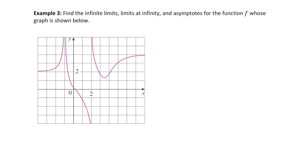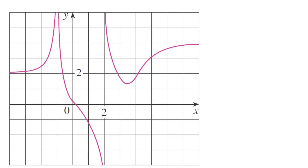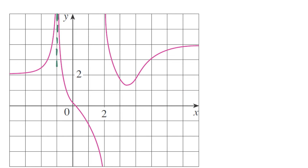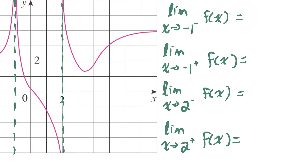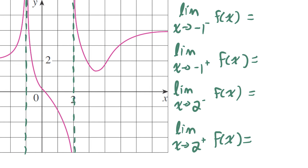Let's do one last example: find the infinite limits, the limits at infinity, and asymptotes for the function f whose graph is shown. For the infinite limits, I'll look for areas of the function trending towards infinity or negative infinity. I'll first draw the vertical asymptotes I see — there's one at x equals negative one and one at x equals two.